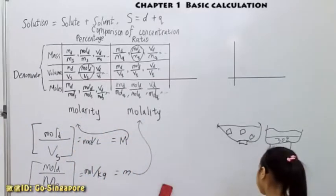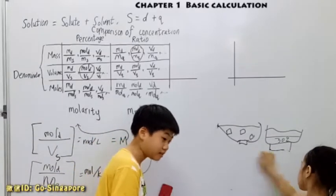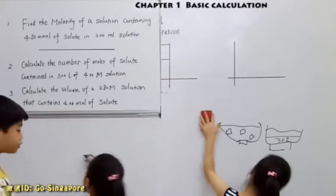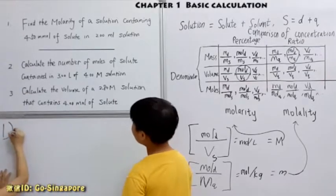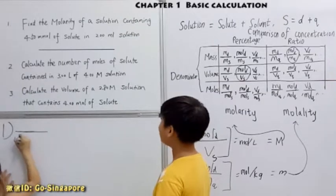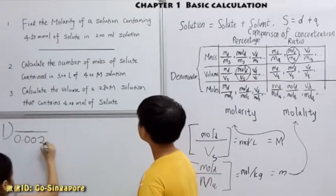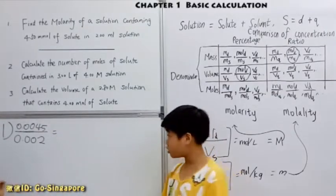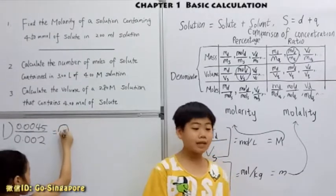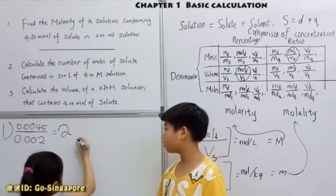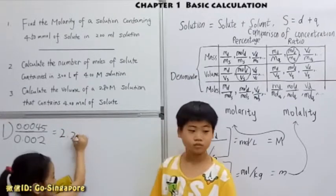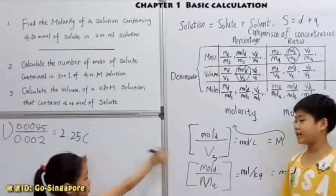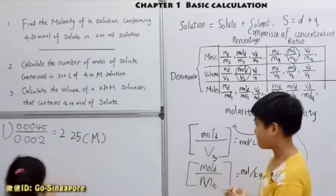So when you know what this capital M is for molarity, you can already start solving questions. For these three questions, the first question: find the molarity of a solution containing 4.5 millimoles of solutes in 25 milliliters of solution. Do you know why I need the 0.00? Because when you change the millimoles to moles, it becomes like that. And also when you change the milliliters to liters, it becomes like that. My unit, which is actually mols per liter, is actually M, capital M.